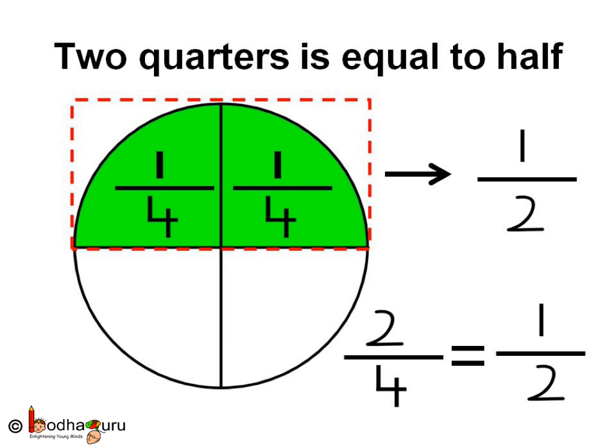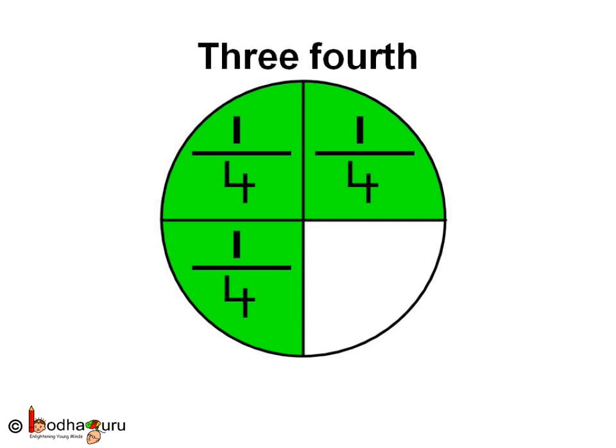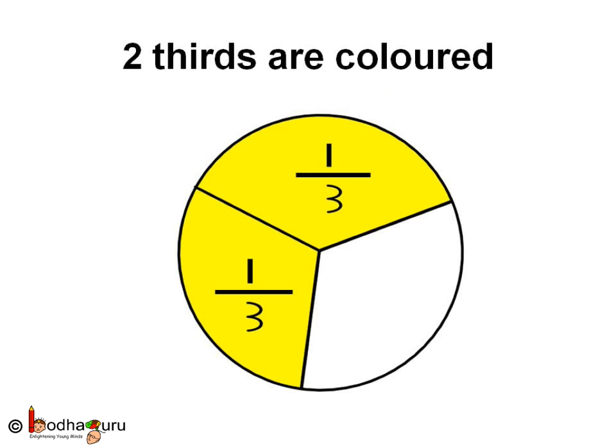Here, three parts out of four parts are colored — we call it three fourths or three quarters. Right, kids? Here the circle has three equal parts, that is thirds. So if two parts are colored, then we call it two thirds colored.